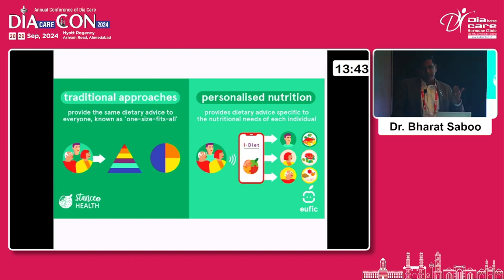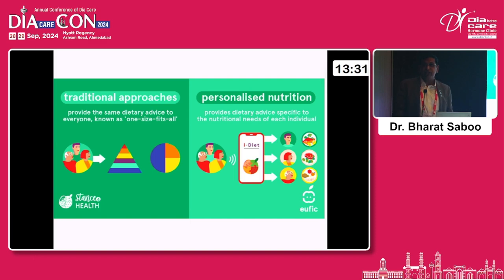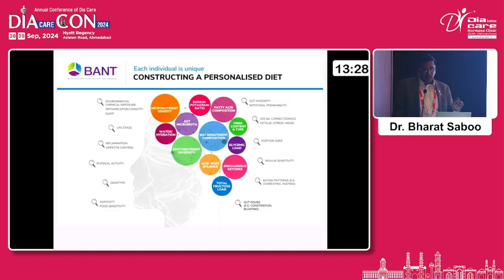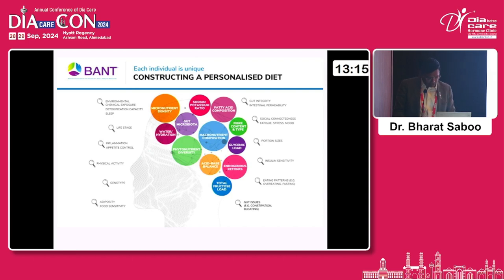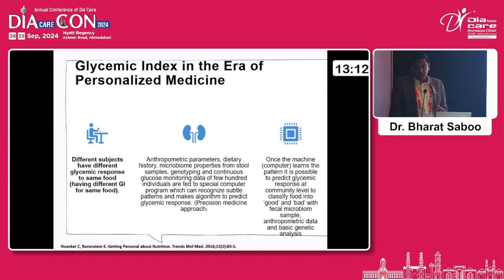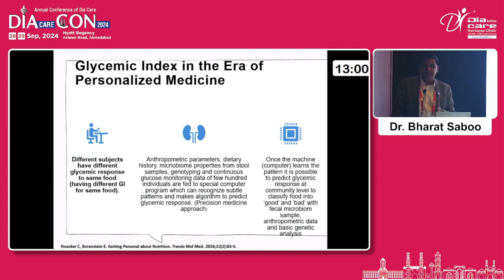In the traditional approach, we provide the same dietary advice — there is a printed diet chart in every clinic which we give to all patients. When we move to personalized nutrition, dietary advice is provided specific to the nutritional and disease needs of the patient. To construct a personalized diet, many parameters are required, and it is not possible for a human to handle this — or he will see only one patient a day.